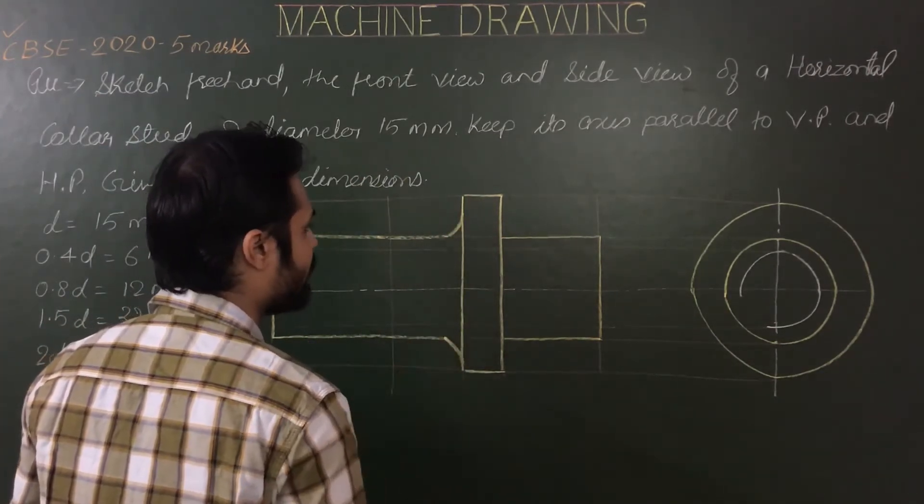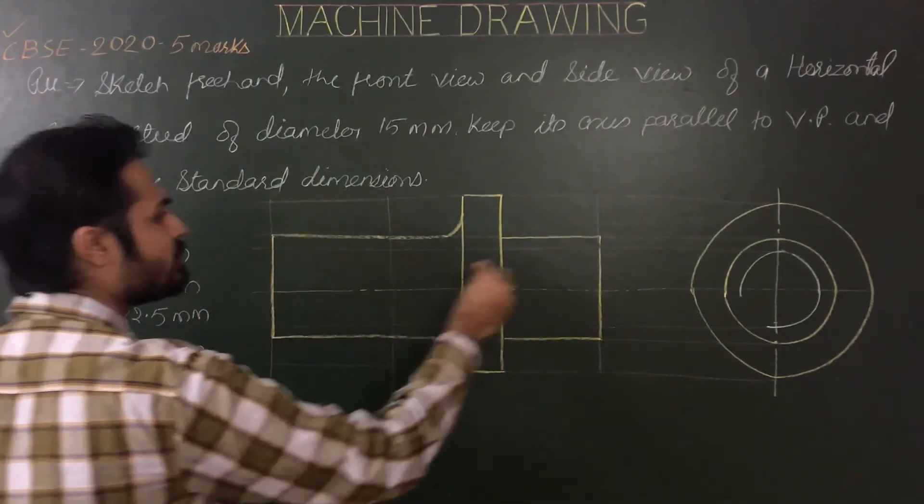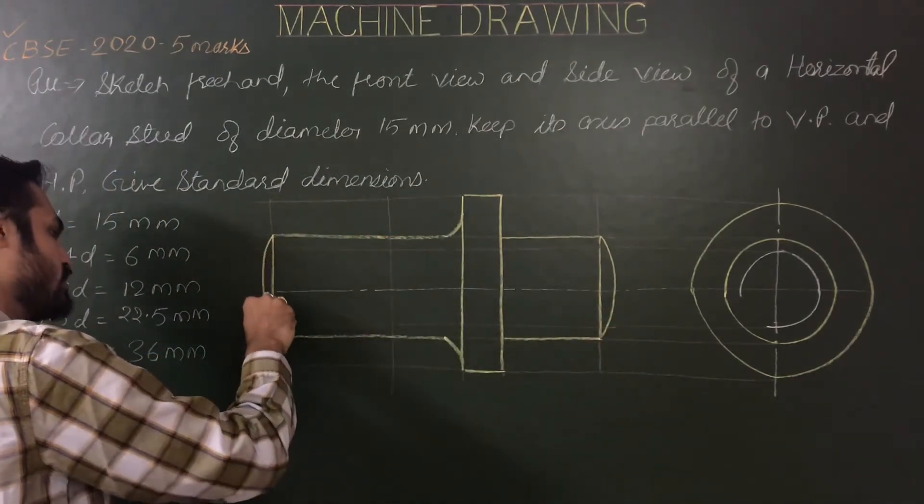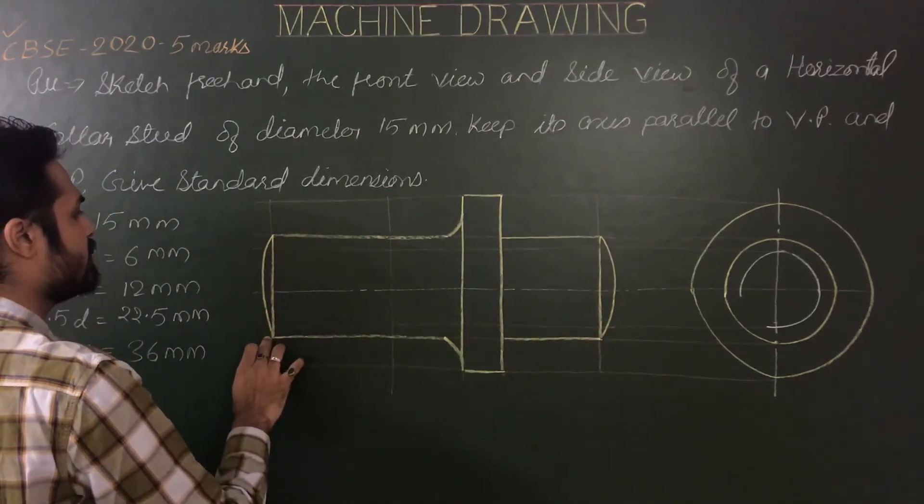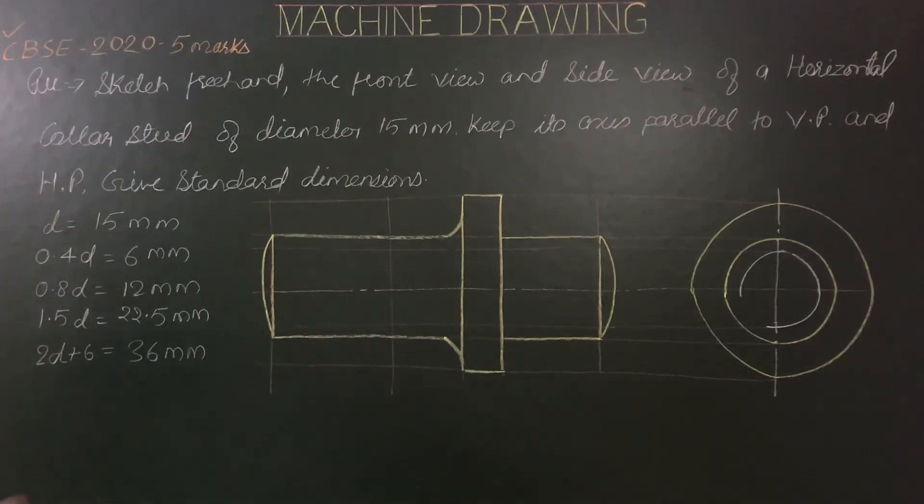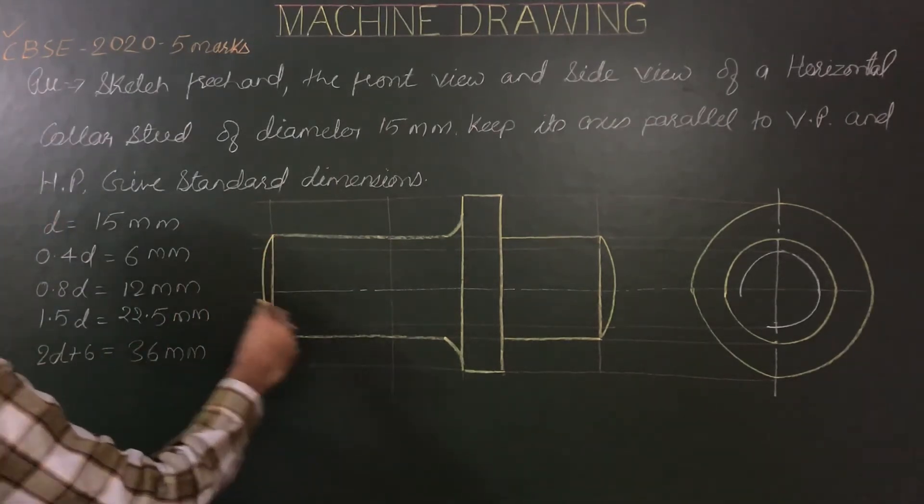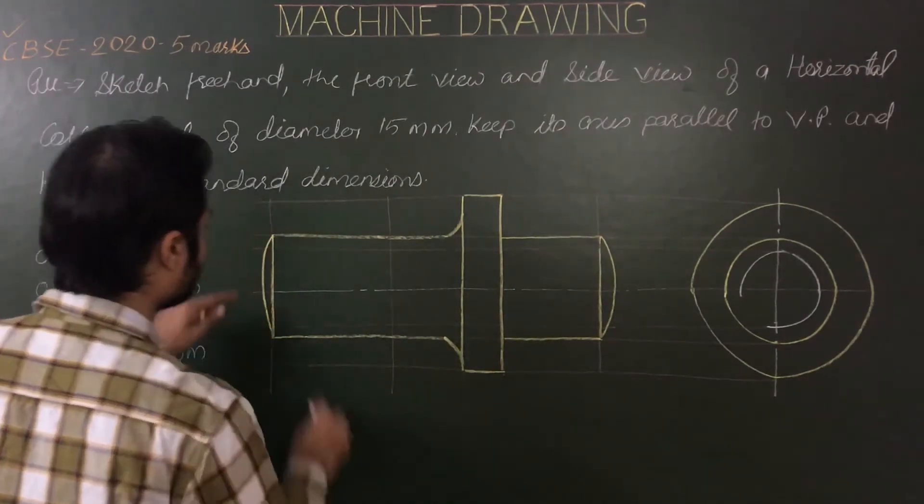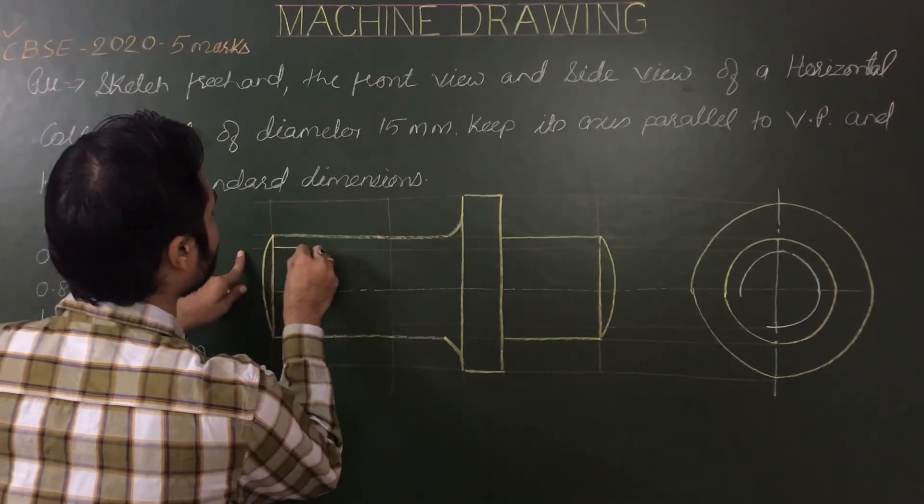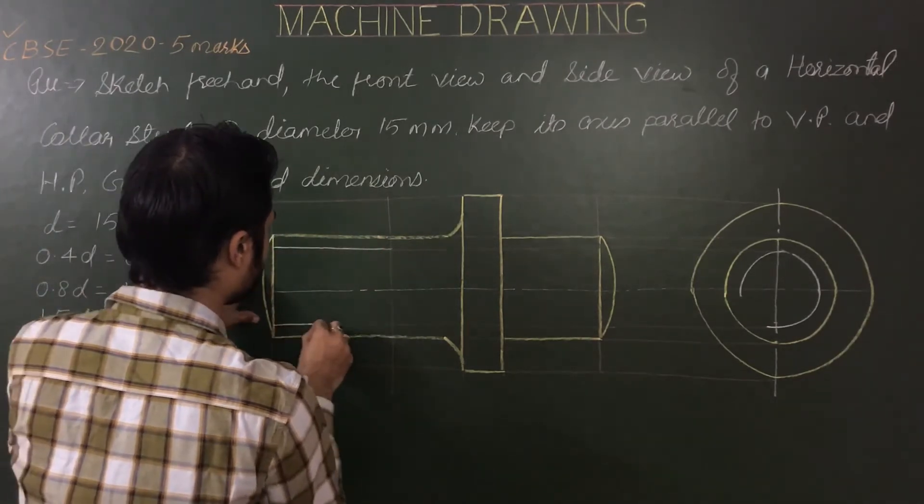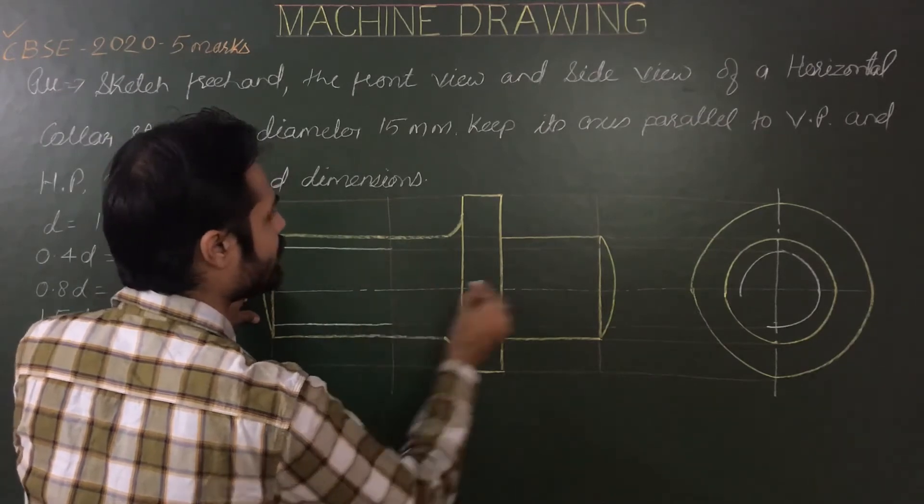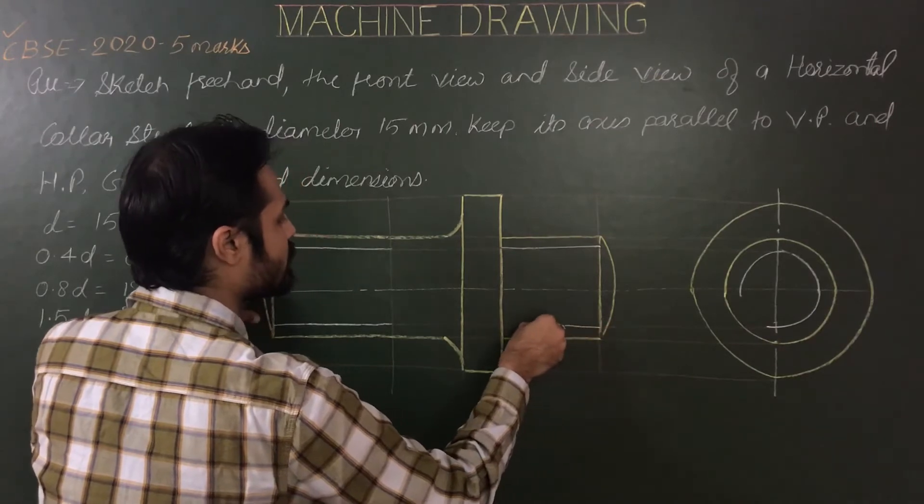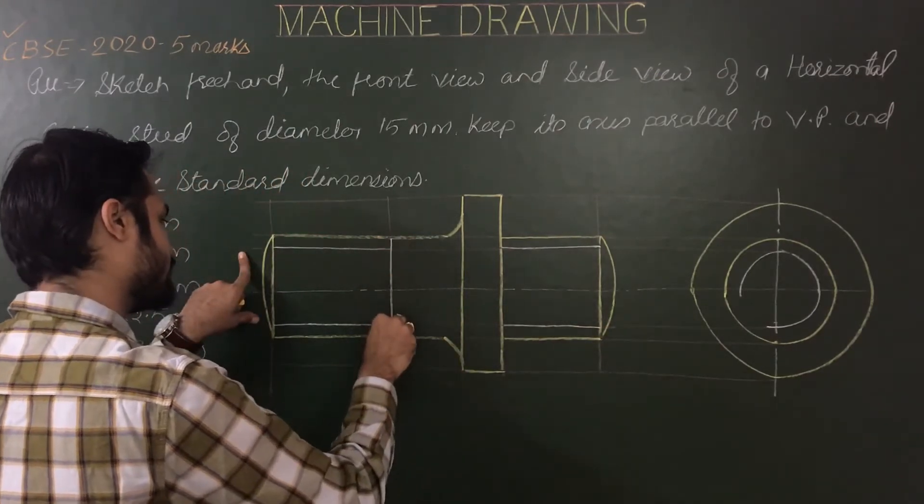Now for metal end and for nut end, ends are curved. So draw freehand curves of radius r, just draw two curved ends like this. Then for representation of internal thread, these are limits of internal thread. Extend it up to the threaded line, similarly extend up to the collar. This is your threaded line, angle 45.